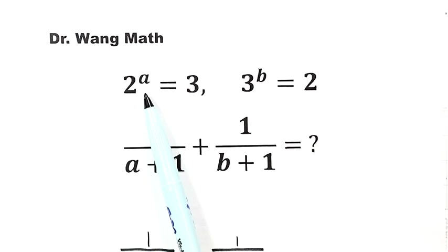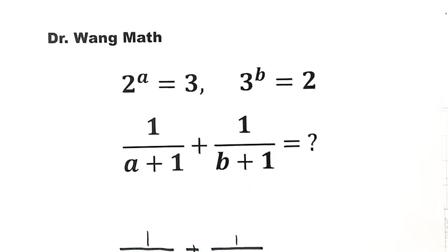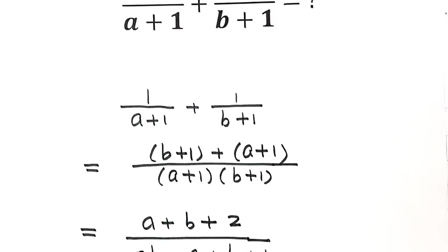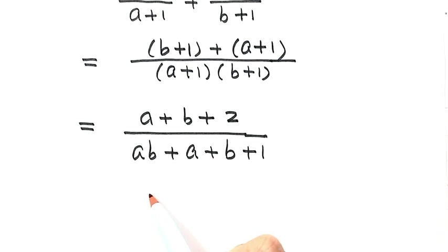Given 2 to the power of a equals 3, then 3 to the power of b equals 2. Let's start from 2 to the power of a equals 3. Because here we have a times b, let's see. Then both sides raise to the power of b. So 2 to the power of a equals 3, then both sides raise to the power of b.